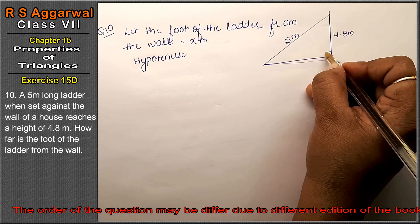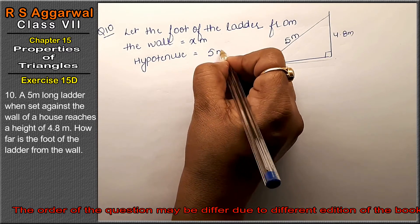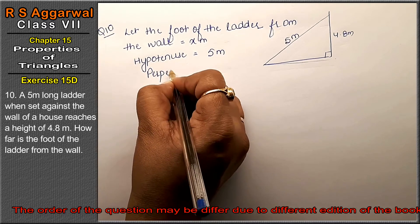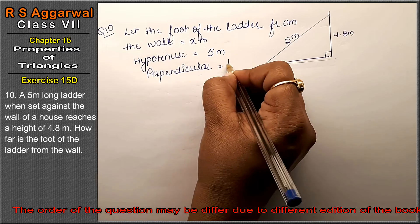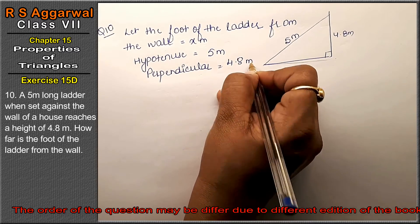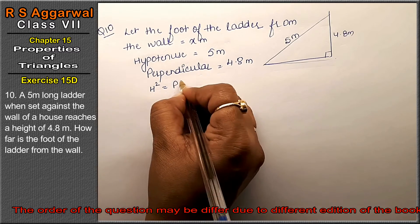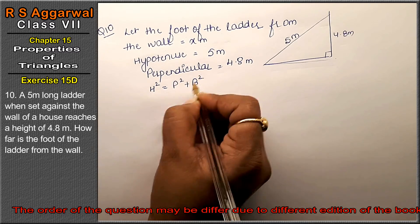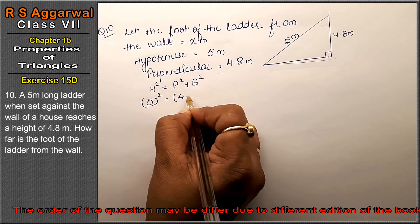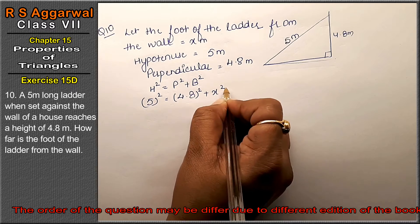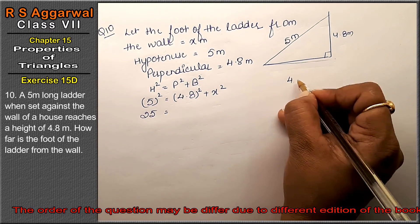Hypotenuse because it's a right angle triangle when the wall is standing. That is 5 meters, and the perpendicular is 4.8 meters. So x squared plus 4.8 squared equals 5 squared.